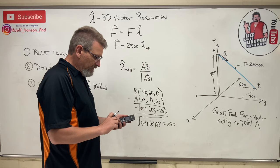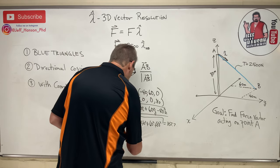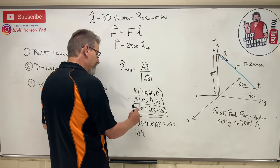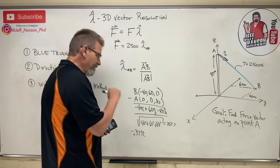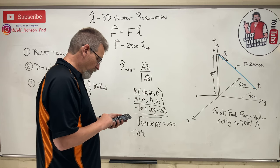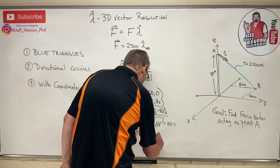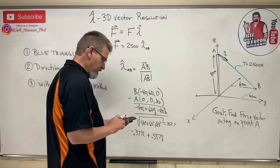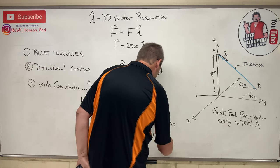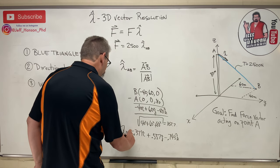So here we go. 40 divided by 107.7 equals 0.371. And that's negative, isn't it? Because our answer has to be negative, positive, negative. And then we have 60 divided by 107.7, 0.557, so plus 0.557 J hat. One more. And that is 80 divided by 107.7 equals 0.743. And that, my friends, is lambda AB.